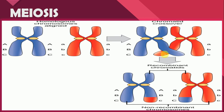After the formation of chiasmata, the non-sister chromatids exchange genetic material with each other — this process is called crossing over, and we also give it the name of genetic variation. Because of this crossing over, as a result of meiosis, the new daughter cells that form are different from their parent cells.